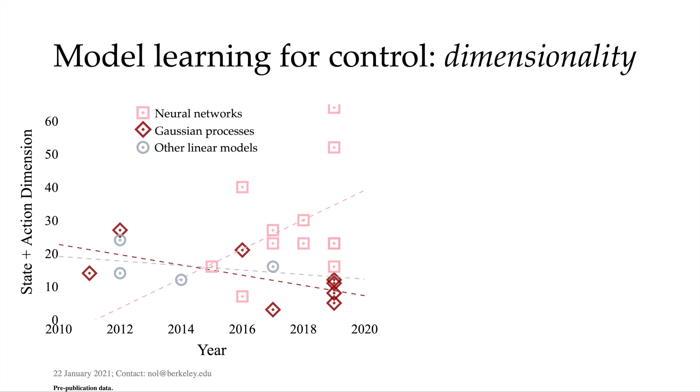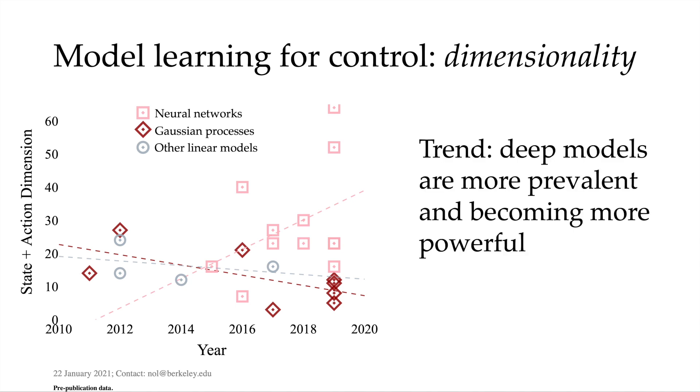Since about 2014 the dimensionality of tasks has been growing with neural network models and relatively constant for other model types. There's a trend: deep networks have not leveled off in task difficulty in terms of dimension nor in rate of adoption, but these black box models come at a cost.